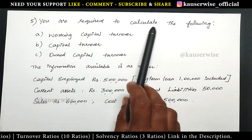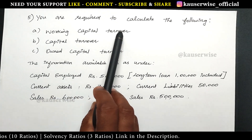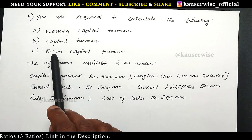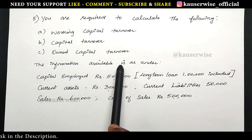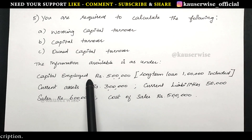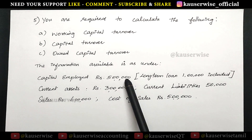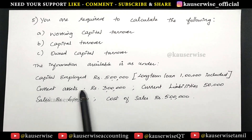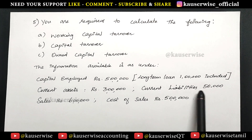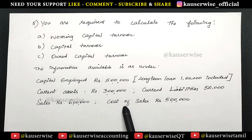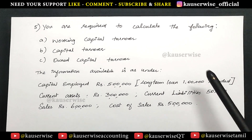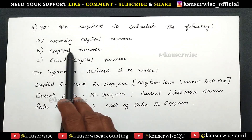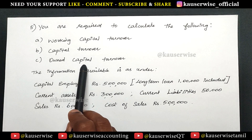You are required to calculate the following: Number 1, working capital turnover. Number 2, capital turnover. Number 3, owned capital turnover. The information available is as under: capital employed 5 lakhs, within that long term loan 1 lakh included. Current assets 3 lakhs, current liabilities 50,000. Sales 6 lakhs, cost of sales 5 lakhs. With this information they are asking you to find out working capital turnover, capital turnover, and owned capital turnover.